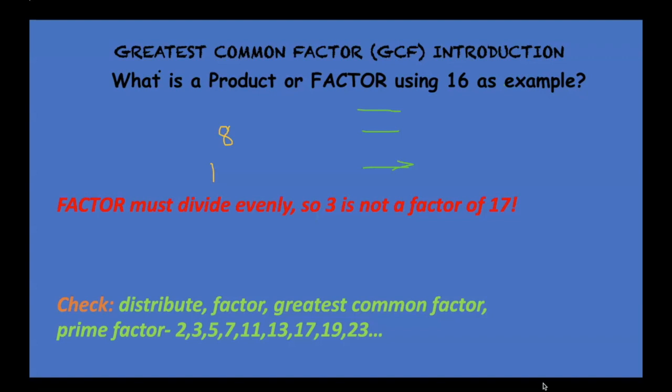So what is the product or factor using 16 as an example? I want to break down for you how I get the numbers for greatest common factor. So we're using 16. You know 1 times 16 is 16, 2 times 8 is 16, and 4 times 4 is 16.